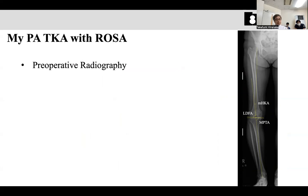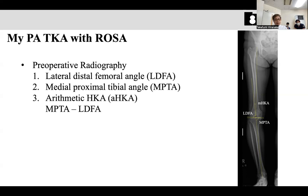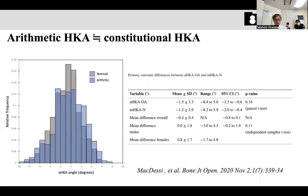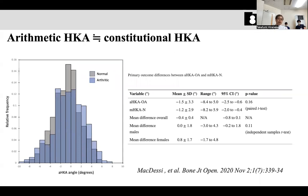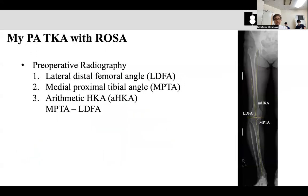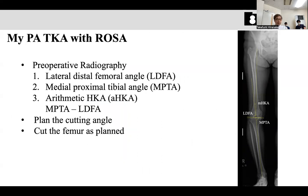Basically I do the major kinematic alignment with very mild restriction. Using the preoperative plan, I measure the native LDFA and MPTA, and the arithmetic HKA is calculated from MPTA and LDFA. The mechanical HKA is also calculated with MPTA and LDFA, because the arithmetic HKA indicates the patient's constitutional HKA as reported by MPTA and LDFA. Then I determine the cutting angle.